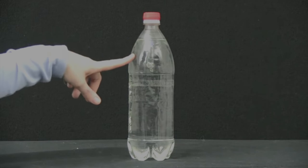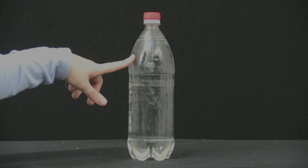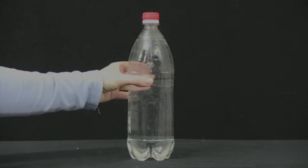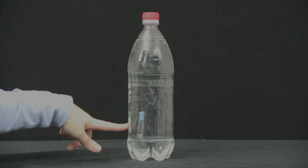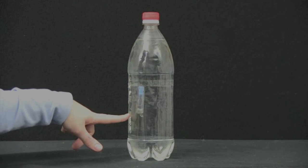However, the air inside the pen nib is compressible. So when we squeeze the bottle, increasing the pressure, the pressure on the air inside that pen nib increases, and so its volume decreases.